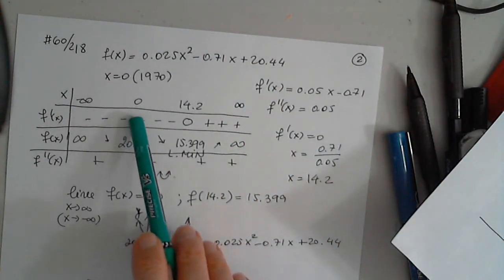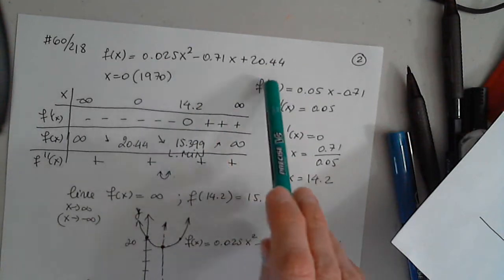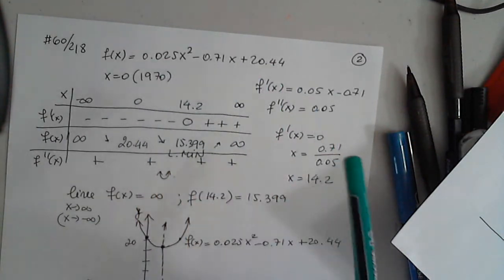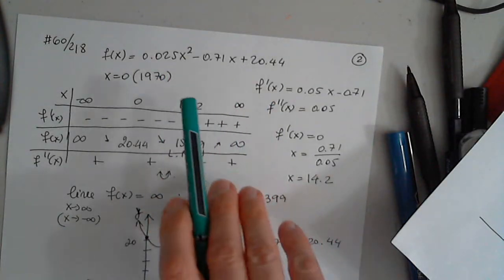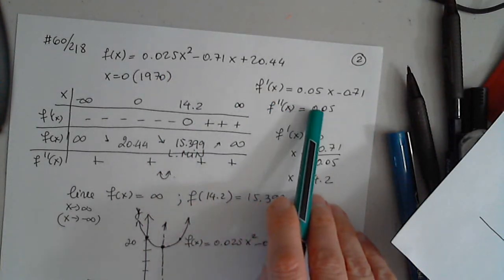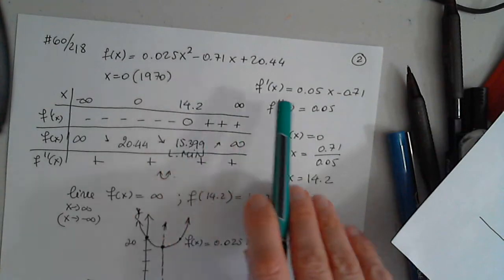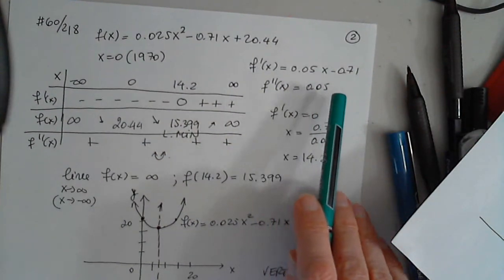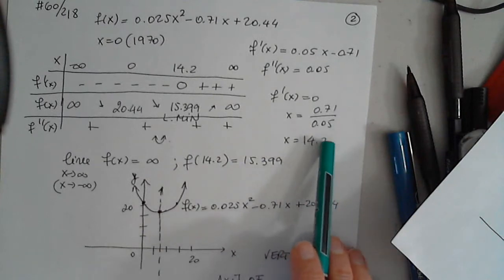So I have to find what happens at 0. And at 0 it's 20.44. When you plug in 0 here, I find its first derivative to be positive 0.05x minus 0.71. I set this equal to 0. And I get 0.71 over 0.05, which is 14.2.